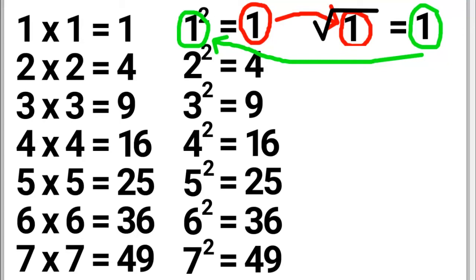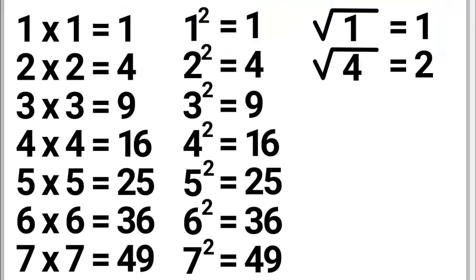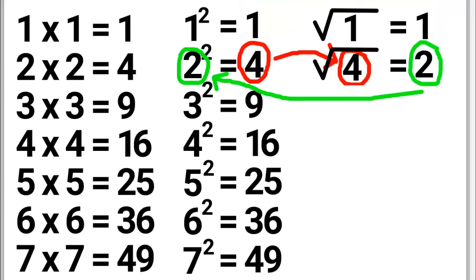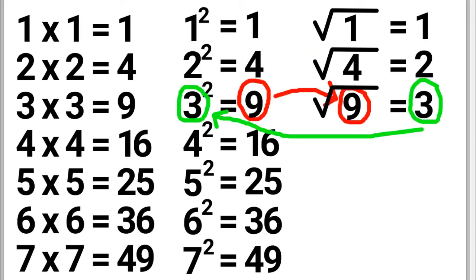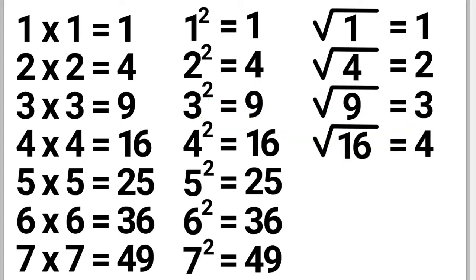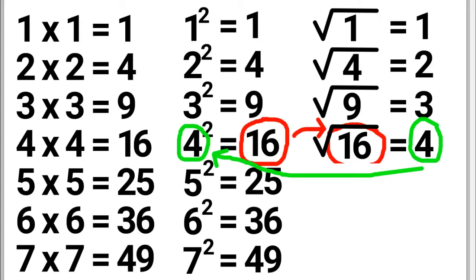You can use this pattern to solve basic square root problems. The square root of 4 is 2, because 2 times itself is 4. The square root of 9 is 3, because 3 times itself is 9. The square root of 16 is 4, because 4 times itself is 16.